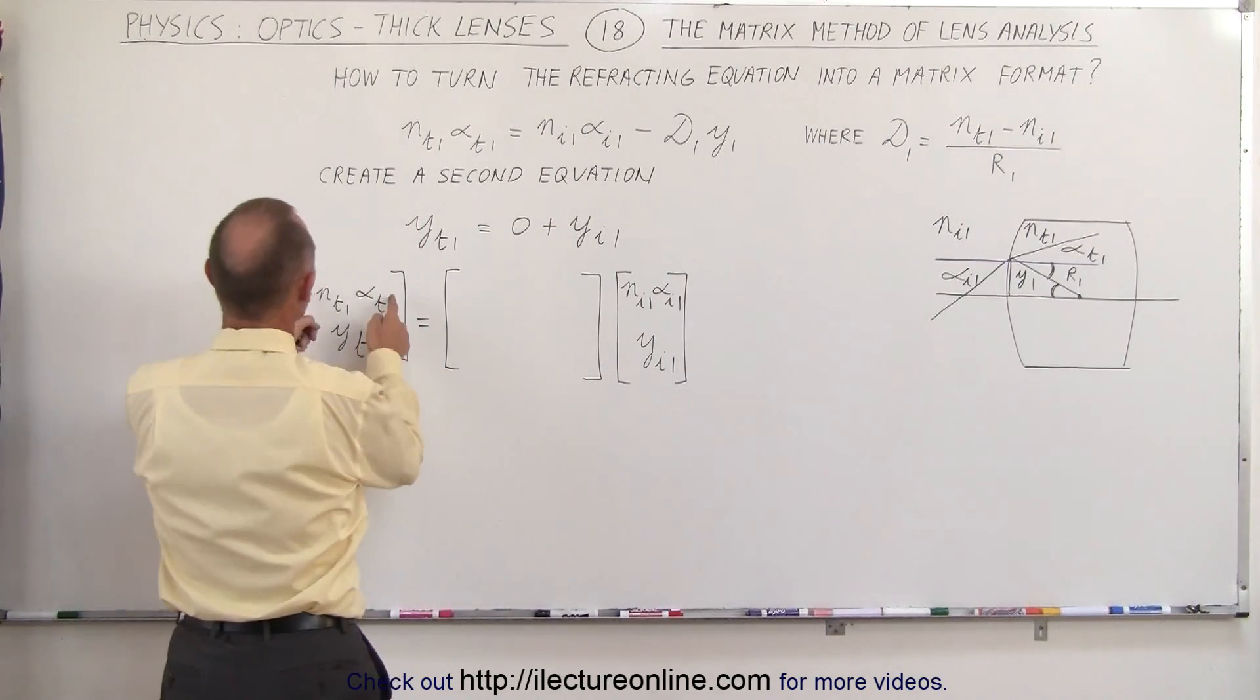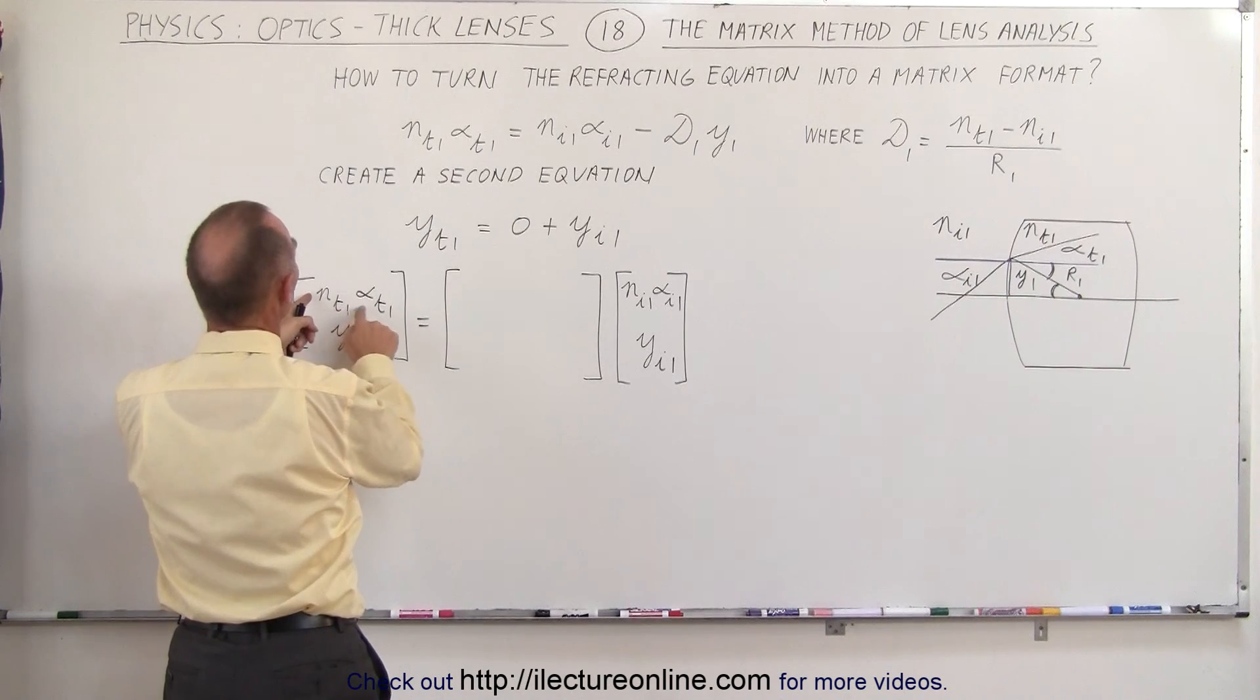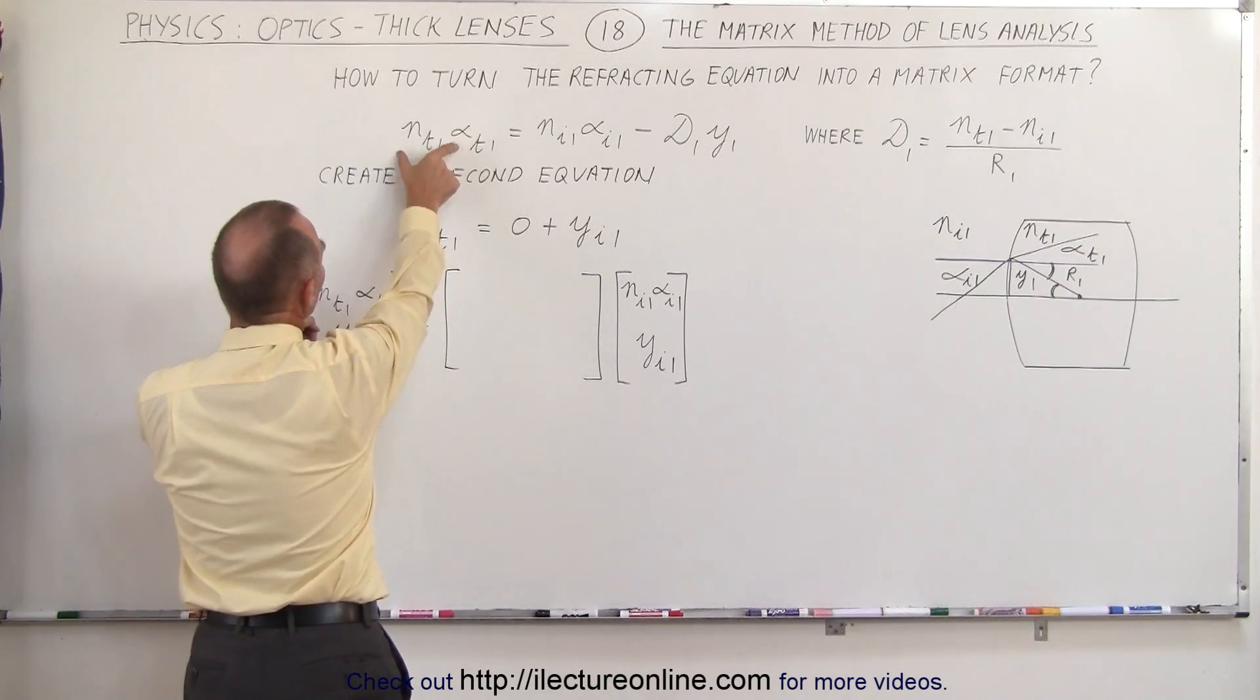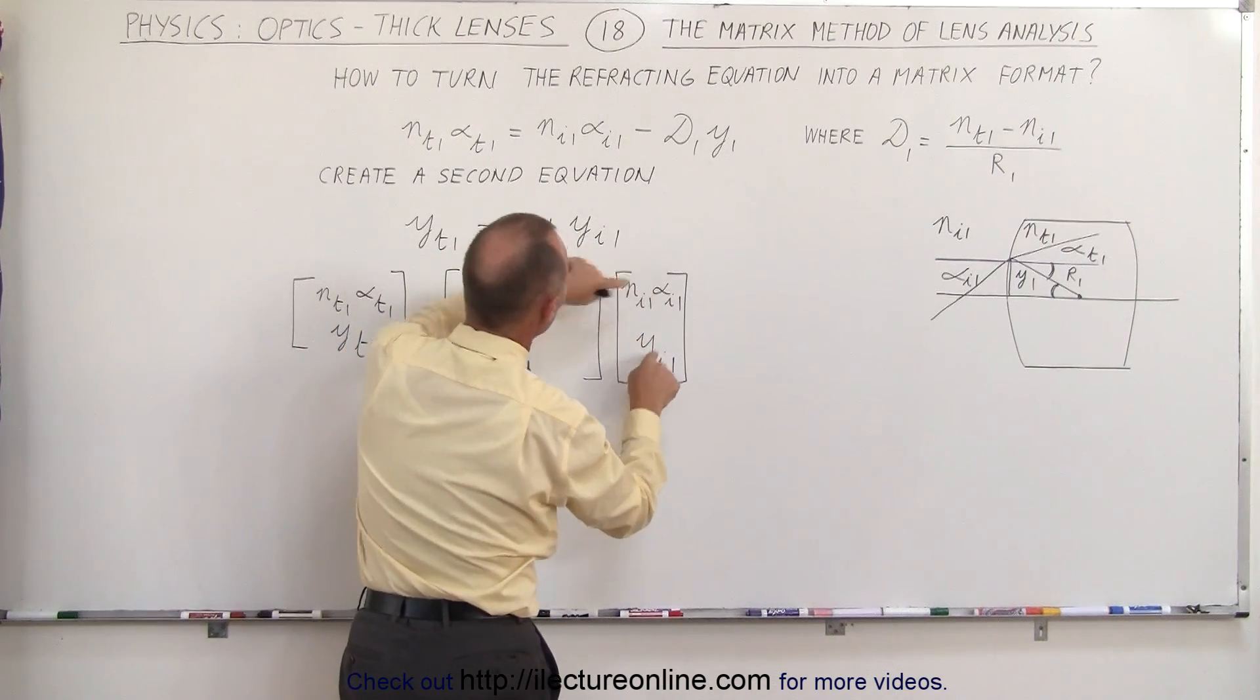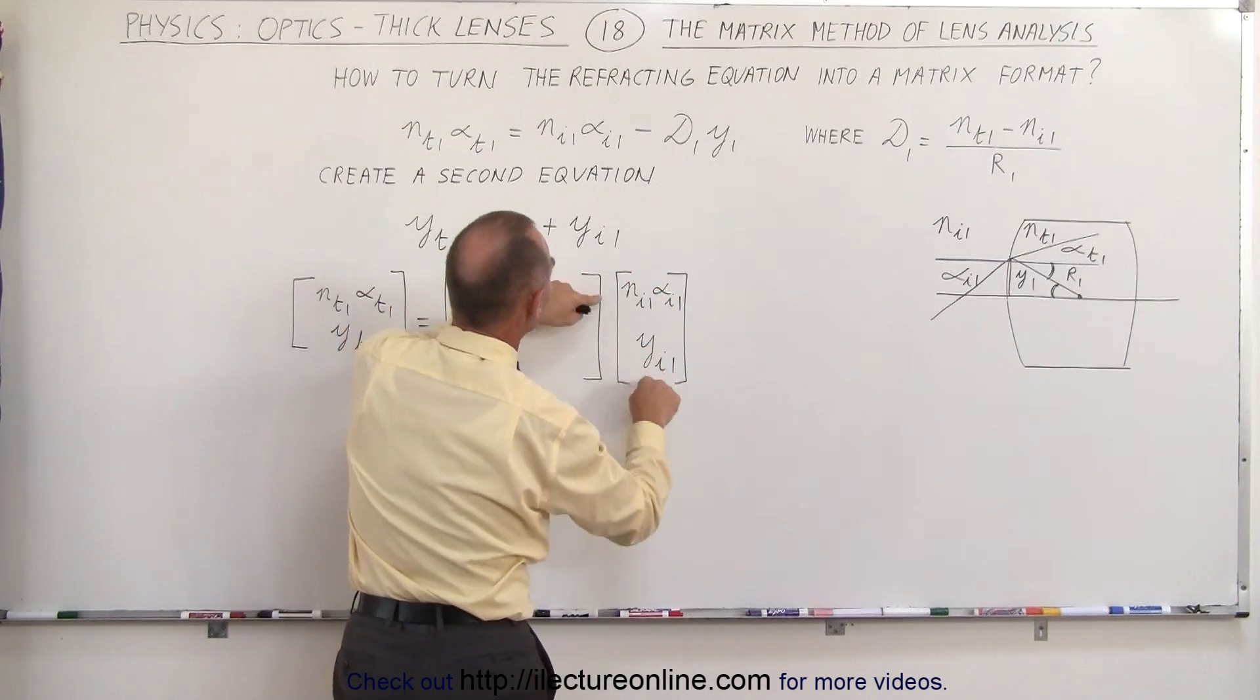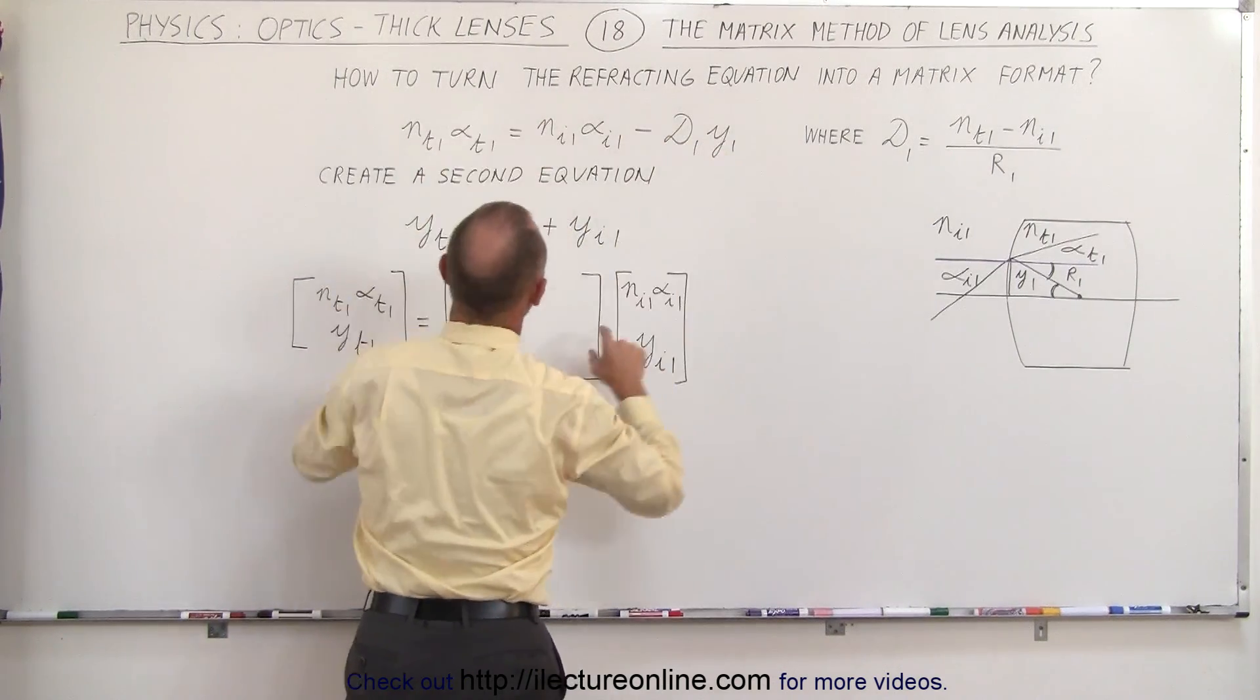So that means on the left side here we have nt1 alpha t1 which is this equals these two elements multiplied by these two elements, so this times this plus this times this gives us this. So we can see that 1 times this will give us this, so we need a 1 there.